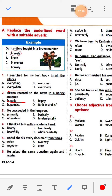Number six: He asked the same question again and again. Options: suddenly, abruptly, repeatedly, unexpectedly. Again and again means 'repeatedly'. Number seven: We have been to Kashmir many times. Options: often, always, more, seldom. The answer is 'often' — We have been to Kashmir often.